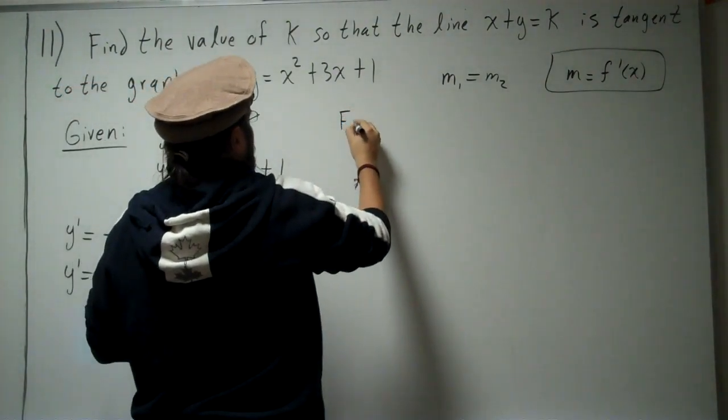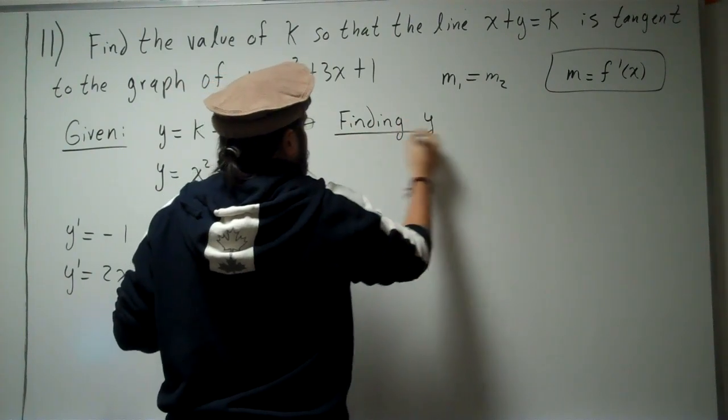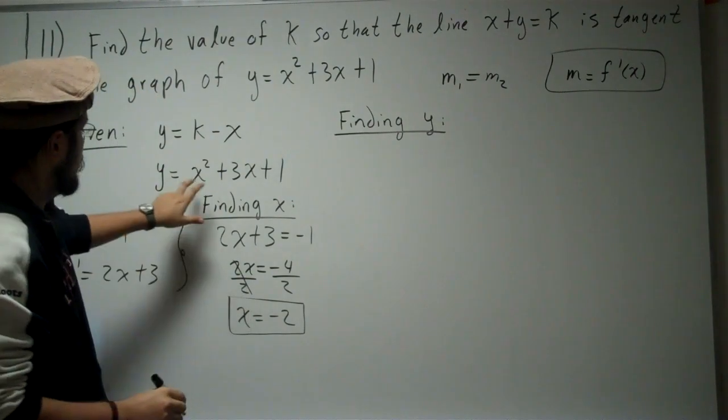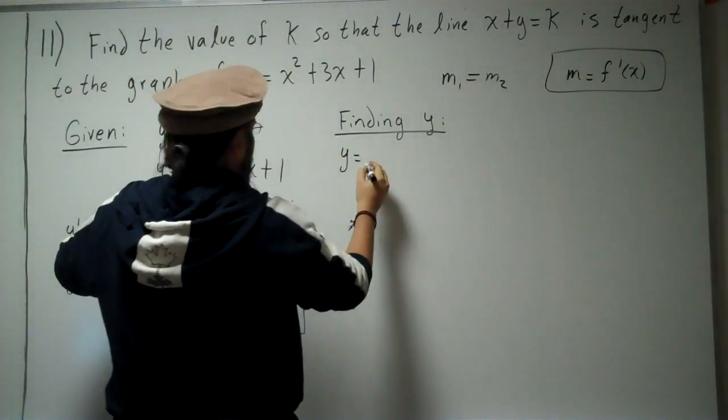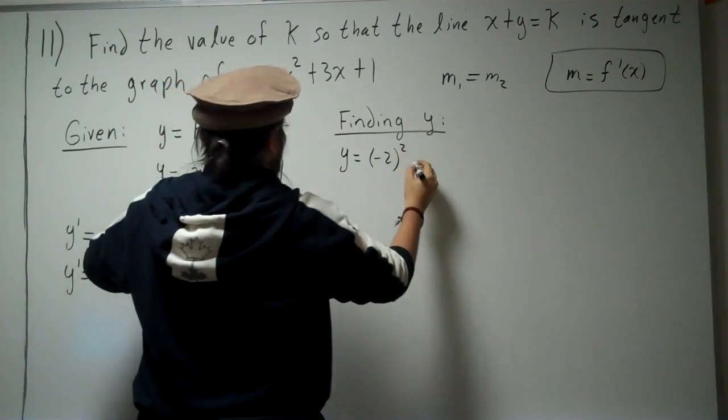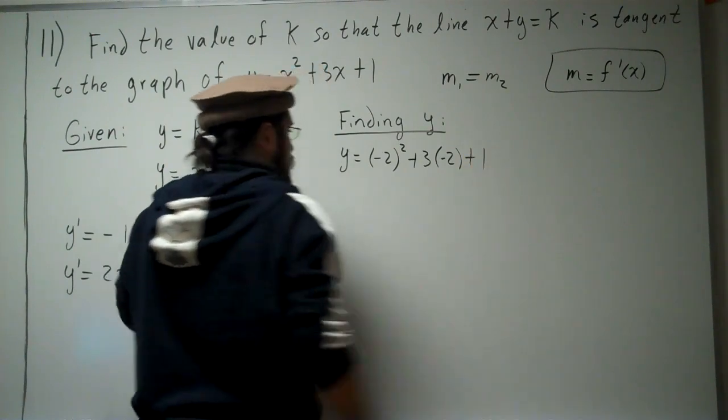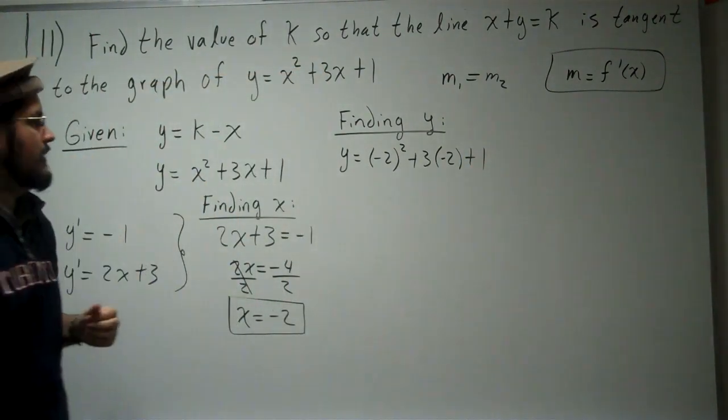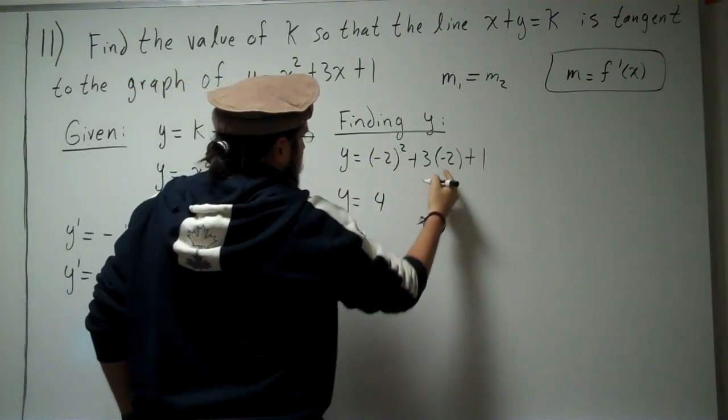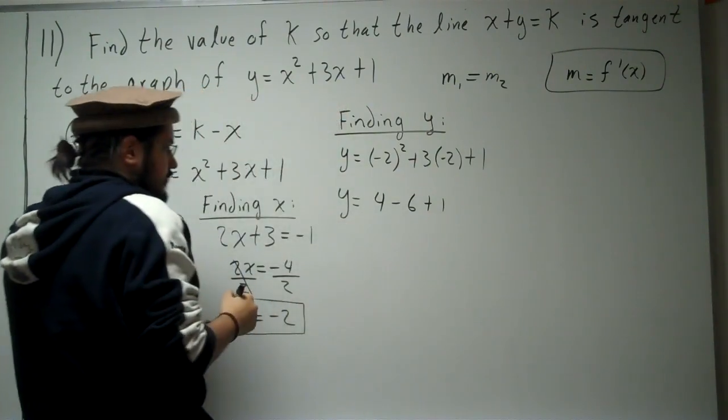To find y, plug this x value back in. So y equals negative 2 squared plus 3 times negative 2 plus 1. Let's compute that. Negative 2 squared is 4. 3 times negative 2 is negative 6 plus 1.